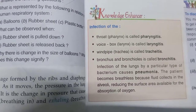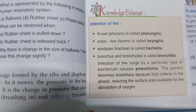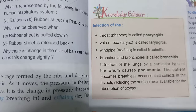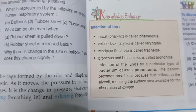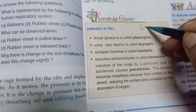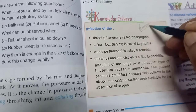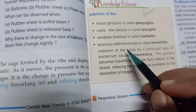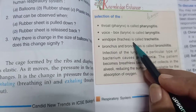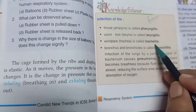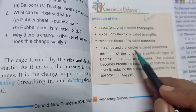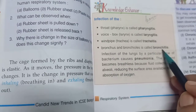Infection of the throat or pharynx is called pharyngitis. Infection of the voice box or larynx is called laryngitis. Infection of the windpipe or trachea is called tracheitis, and infection of the bronchus and bronchioles is called bronchitis.